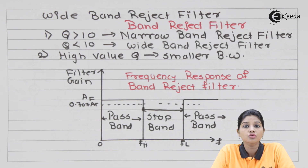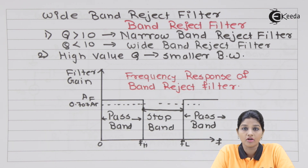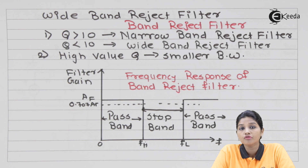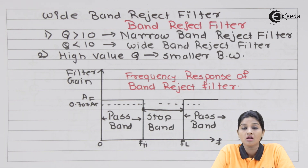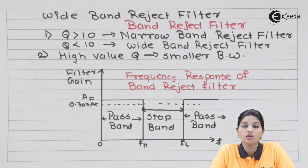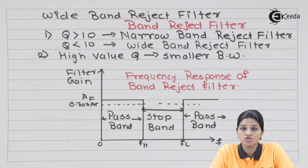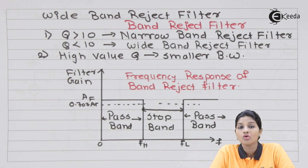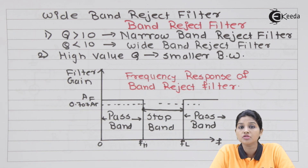Based on the value of Q, two different types of band reject filter are the wide and narrow band reject filter. The value of Q plays an important role as it decides the bandwidth of the filter. A higher value of Q indicates a smaller bandwidth because Q and bandwidth have an inverse relationship, meaning Q equals FC divided by bandwidth. As Q increases, the bandwidth is reduced and the frequency response becomes sharper.